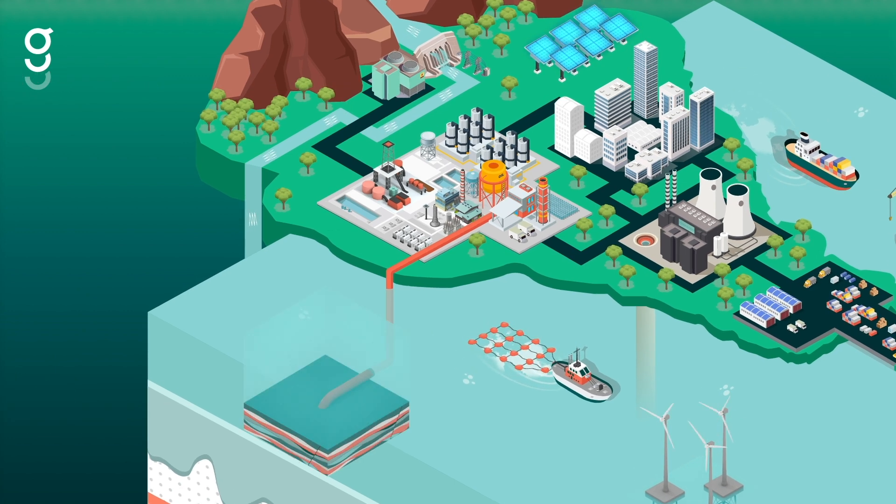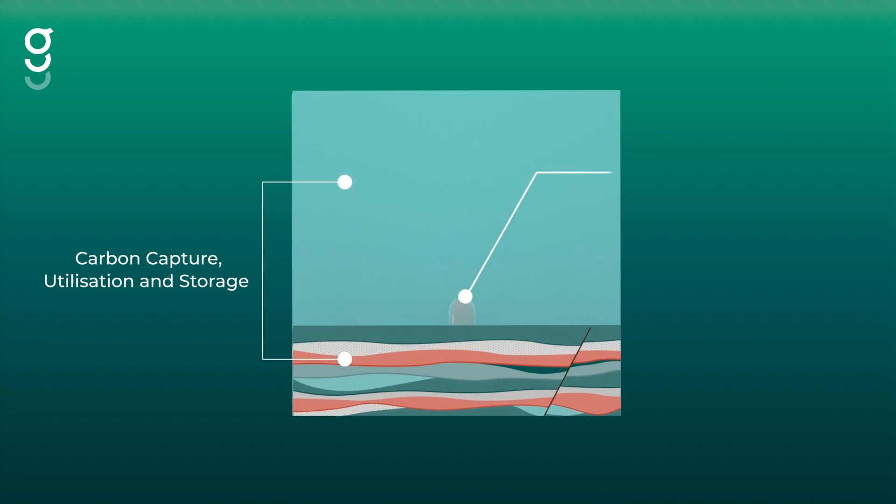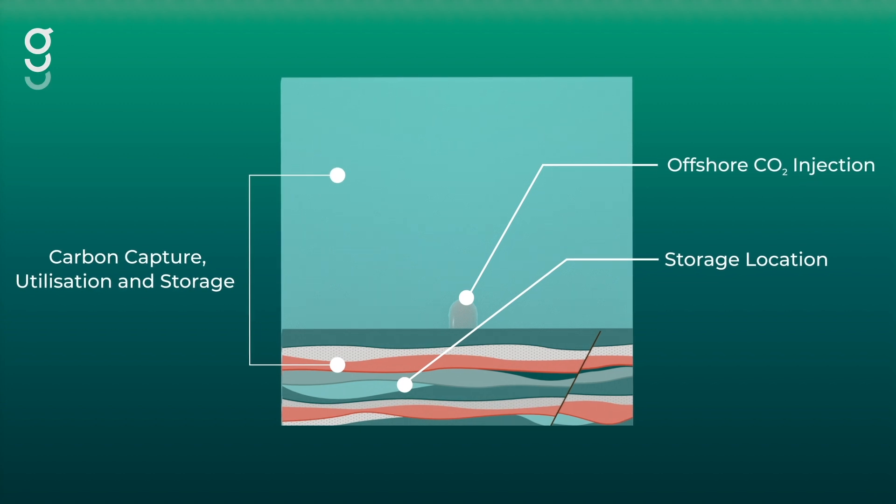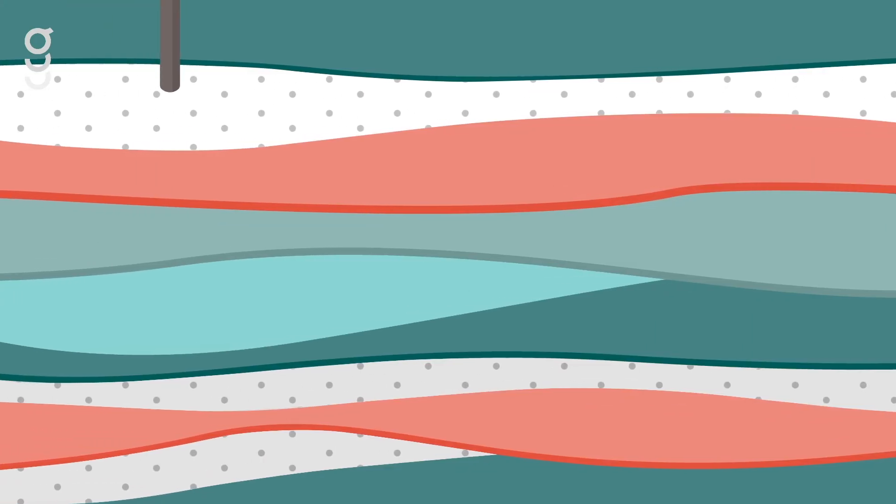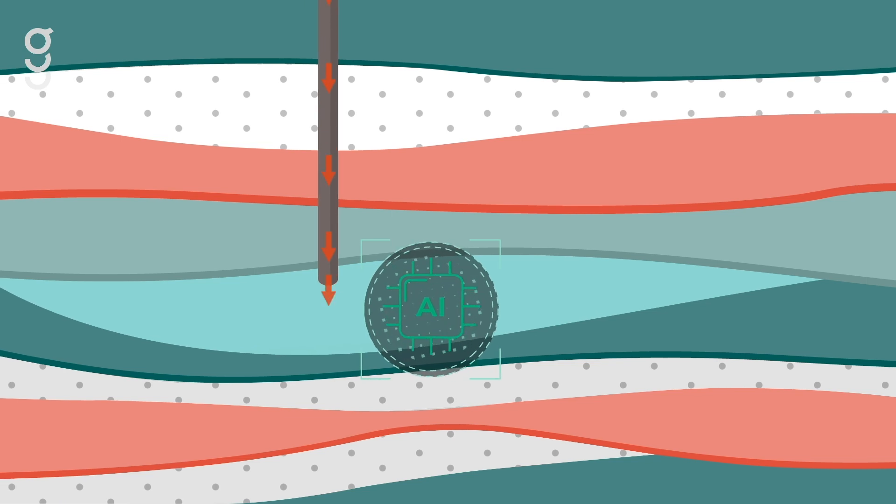Looking towards a net-zero future, the successful drawdown of excess carbon dioxide from the atmosphere and its storage in abandoned aquifers or hydrocarbon fields will play a vital role in tackling global climate change. Fault analysis using GeoTeric's AI solution could play a key role in realizing these projects.